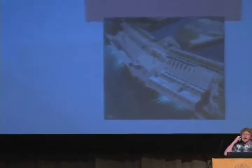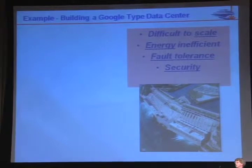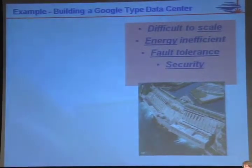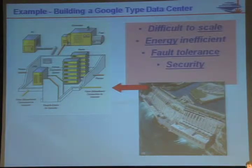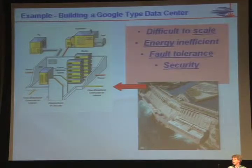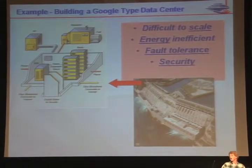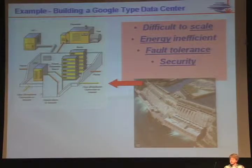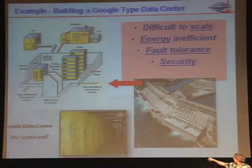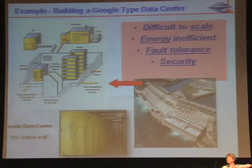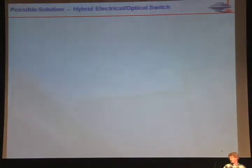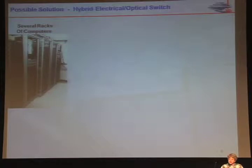I want to give an example from research we do in building data centers of the future — a collaborative project between both departments. Modern data centers are very power hungry. Believe it or not, they're located right next to inexpensive power. Google is locating these up in the Pacific Northwest, close to hydropower, because that's a big chunk of their bill. The question is: how do we build data centers to be more energy efficient and scale? Modern data centers can hold over 100,000 individual servers in a single center.